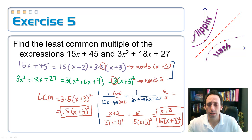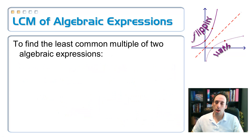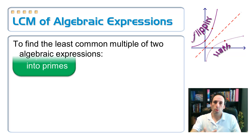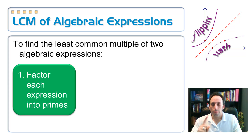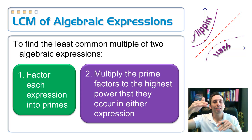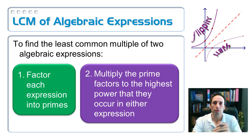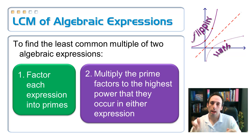So to sum this up — least common multiple of algebraic expressions: first, factor whatever expressions you have into prime factors. Then take the highest power of each of those factors and multiply them all together to get your least common denominator. In the next video we're actually going to add and subtract some fractions. Stay tuned.